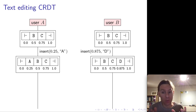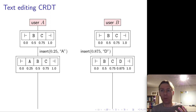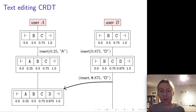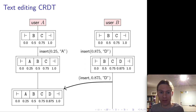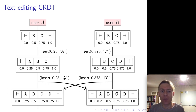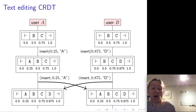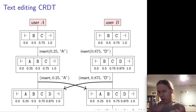Assuming you have a suitable number library for arbitrary precision arithmetic, you can take these operations and send them over the network in a straightforward manner. The insertion of D at position 0.875 can be applied on the right-hand side and will slot in just in the right place. Likewise, the insertion of A at 0.25 will slot in on the other side into the right place. This is a very simple way of achieving the same property without all the complexity of operational transformation.